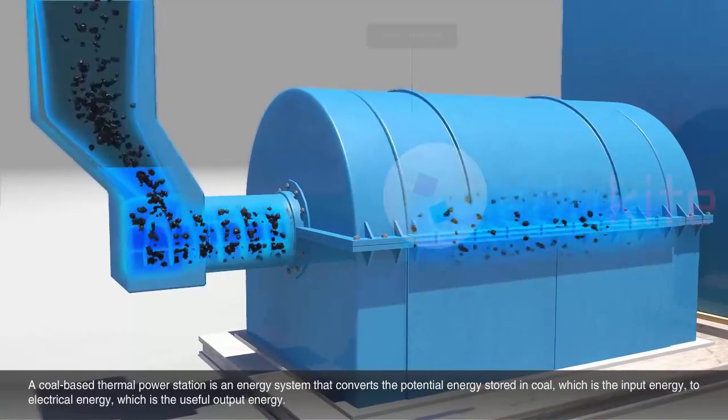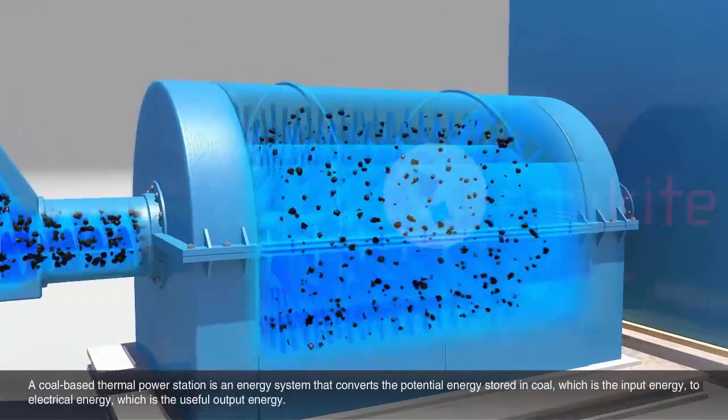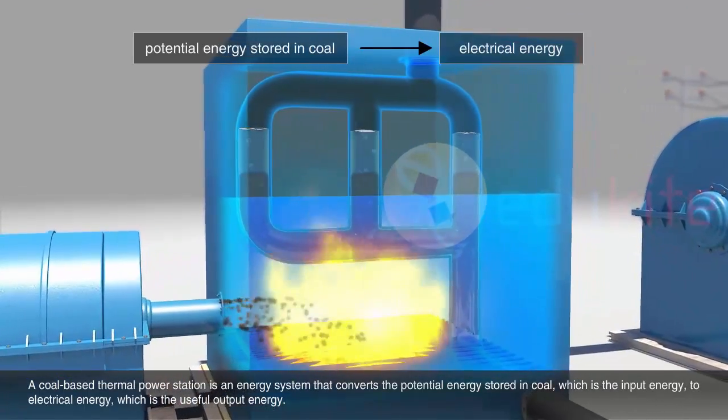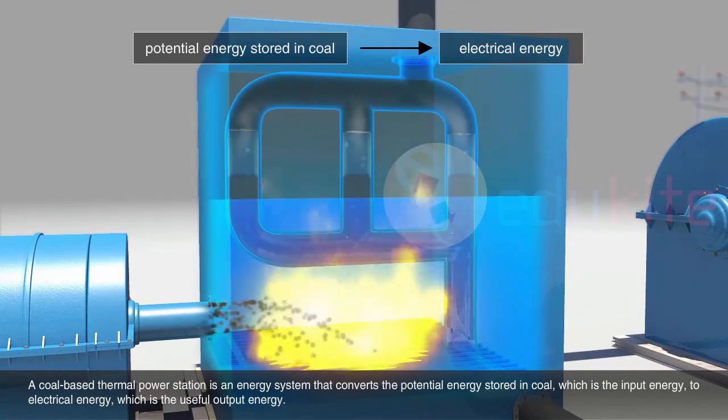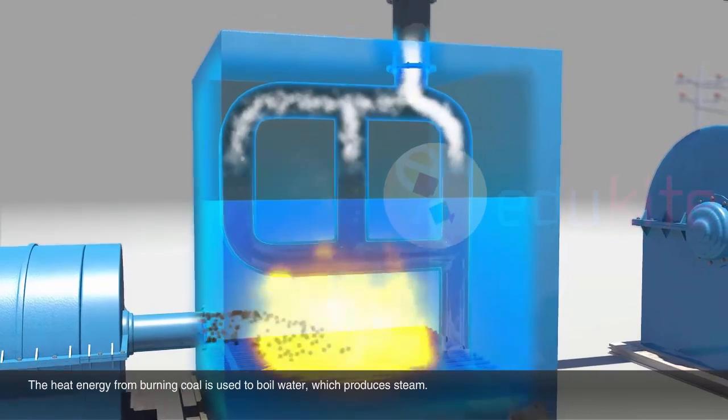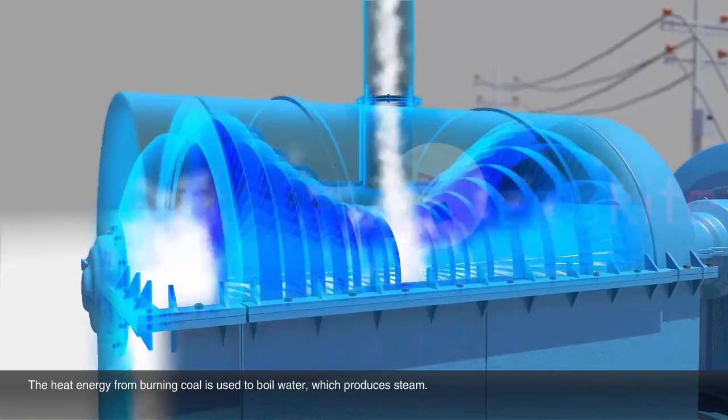A coal-based thermal power station is an energy system that converts the potential energy stored in coal, which is the input energy, to electrical energy, which is the useful output energy. The heat energy from burning coal is used to boil water, which produces steam.